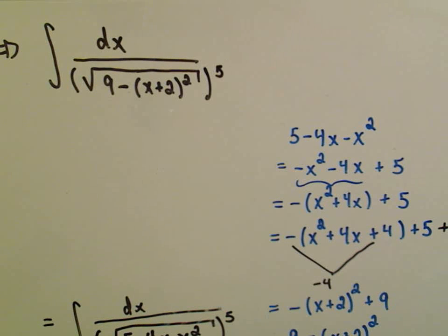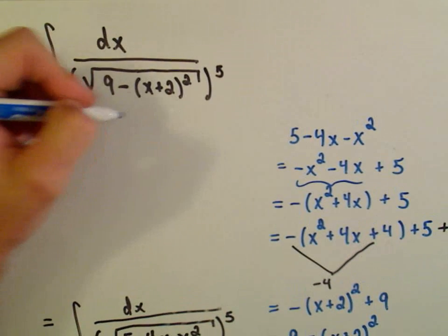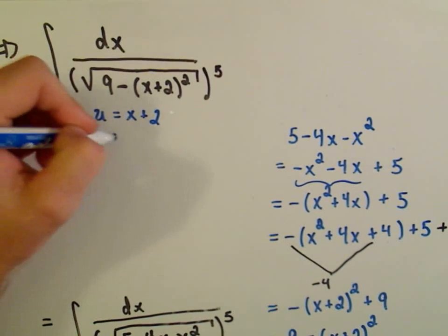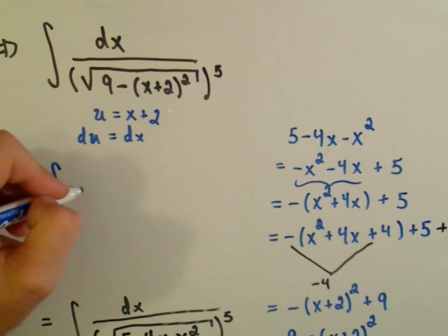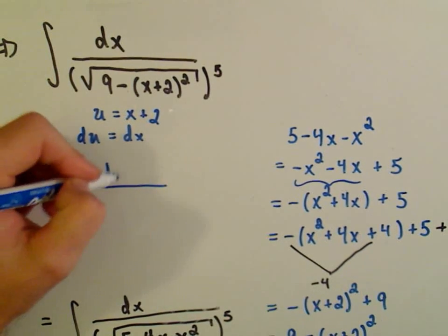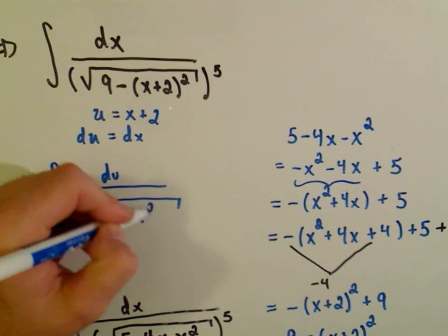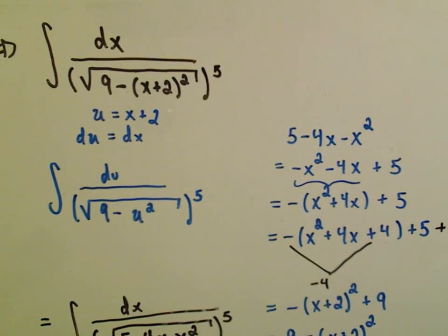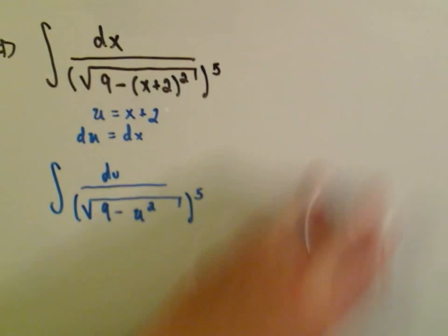Some people like to do it. At this point, you could do even a little u substitution. u would be x plus 2. du would then just be dx. So now we can rewrite our integral as du over the square root of 9 minus u squared, all raised to the fifth power. And now it does look very much like a trig substitution problem.